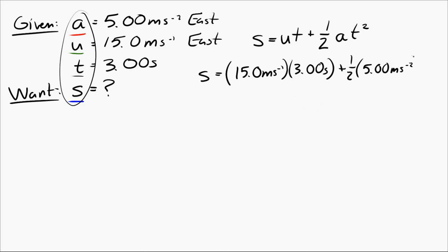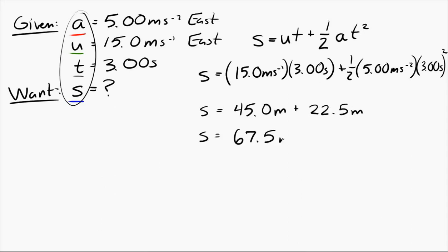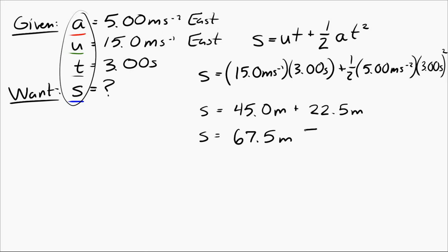Carrying through the units and doing the algebra correctly, you get a displacement of 67.5 meters. Displacement is a vector, so it needs a direction. The object is moving east and accelerating east, so it gets faster and faster toward the east — meaning it must have traveled east. It would be surprising if something moving east ended up with a westward displacement.